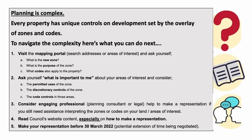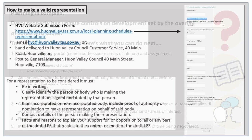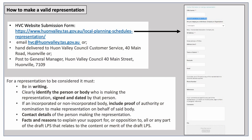So what can you do? Familiarising yourself with the guideline will allow you, who understands your land the best, to consider if the new zone has been applied correctly given the characteristics of your land. If you believe your property better fits with the application criteria of another zone, you can make a representation on this during the exhibition period, which the Commission have agreed to extend to the 30th of April. Your representation must include the reason why you believe the zone has been incorrectly applied, with justification for this.